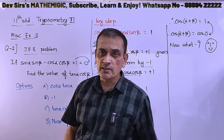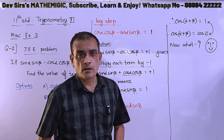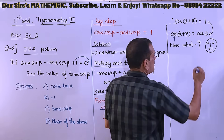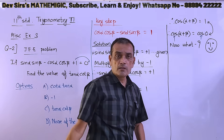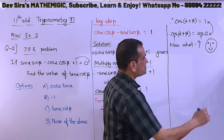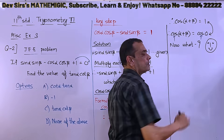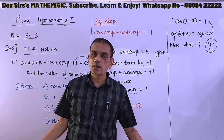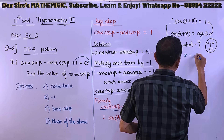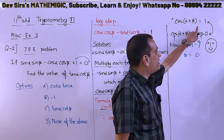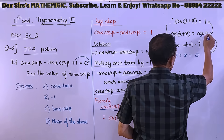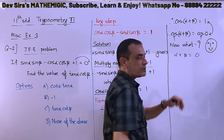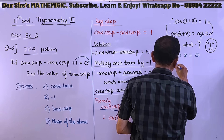Now starts the fun! For the 1 on the right hand side, I am going to write cos 0, because cos 0 is 1. Once I have cos on both sides, I can ignore cos and write alpha plus beta equal to 0. So we get the simple equation: alpha equal to minus beta.